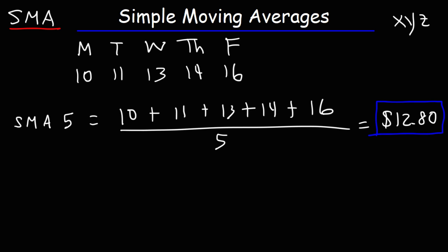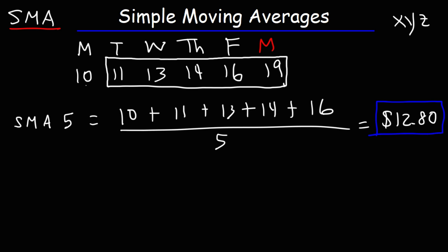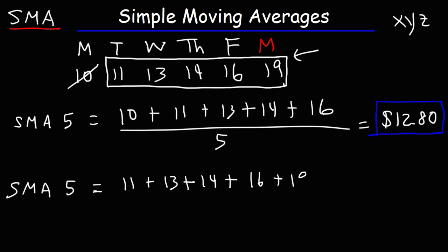Now the average is going to change. The next week on Monday, let's say the stock price is now $19. The new SMA value will be based on the closing price of the stock for the last five days, so we drop off the old Monday and take the new Monday value of $19. Our new SMA 5 is 11 plus 13 plus 14 plus 16 plus 19 divided by 5, which equals $14.60.